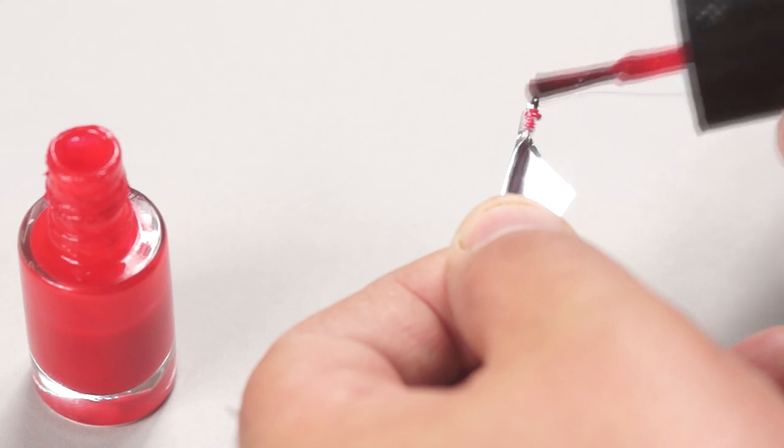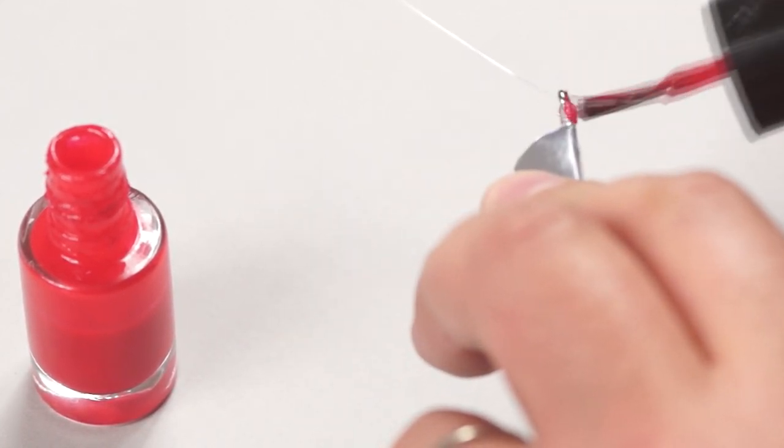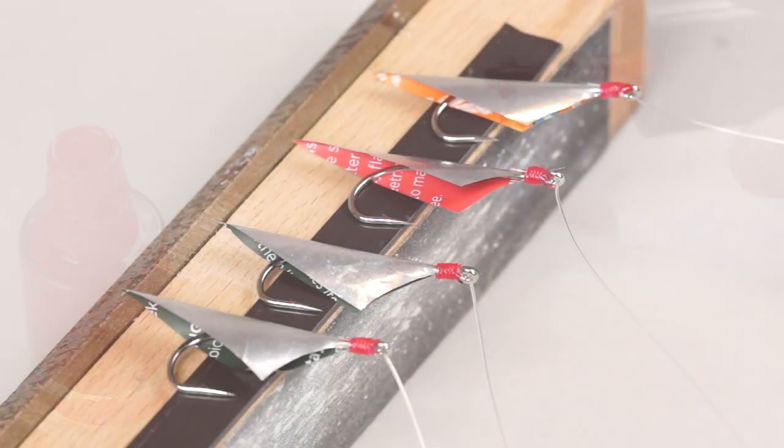To provide a little extra protection and some contrast I'm going to give the knot a coat of nail varnish. And then I can repeat the process until I have 4 lures.